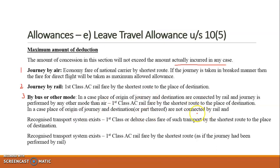If the origin and destination are not connected by rail and a recognized transport system exists, then the first class or deluxe class fare of that transport by the shortest route is the maximum deduction. If no recognized transport system exists, then first class AC rail fare by the shortest route is assumed, as if the journey had been performed by rail. Your actual ticket price will be compared against these maximum limits — if your ticket is less, you get less; if it exceeds the maximum, you get only the maximum.